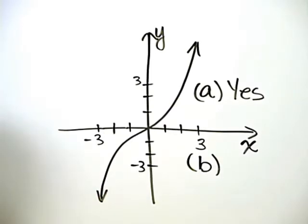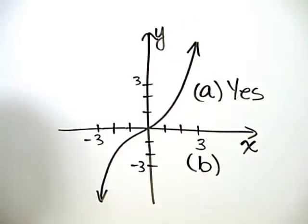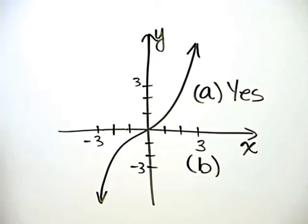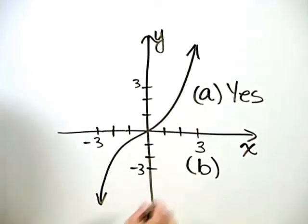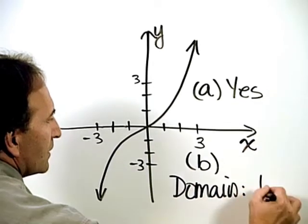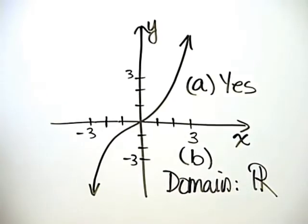The arrows on the ends of this graph mean that it continues in both directions forever. Therefore, it spans the entire X axis, and so the domain is the set of all real numbers, which we can write like that.